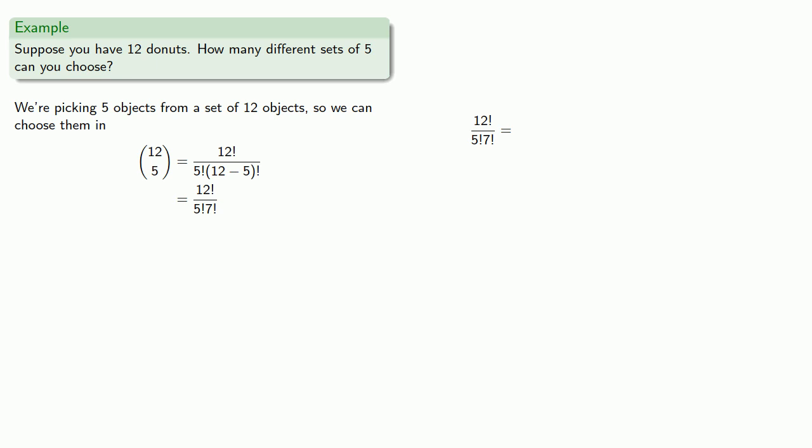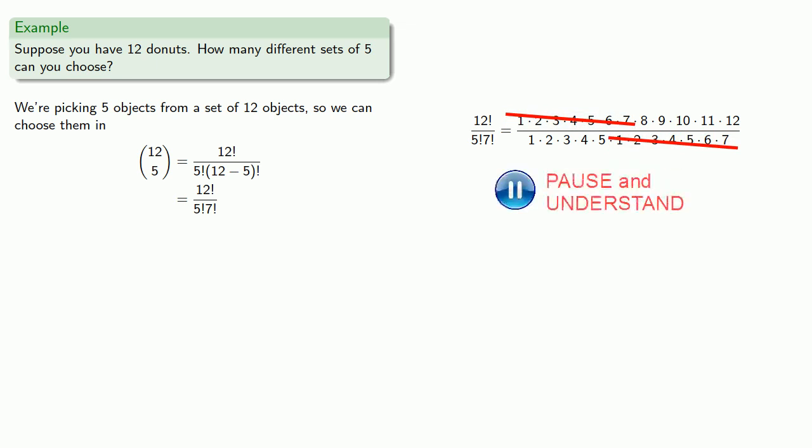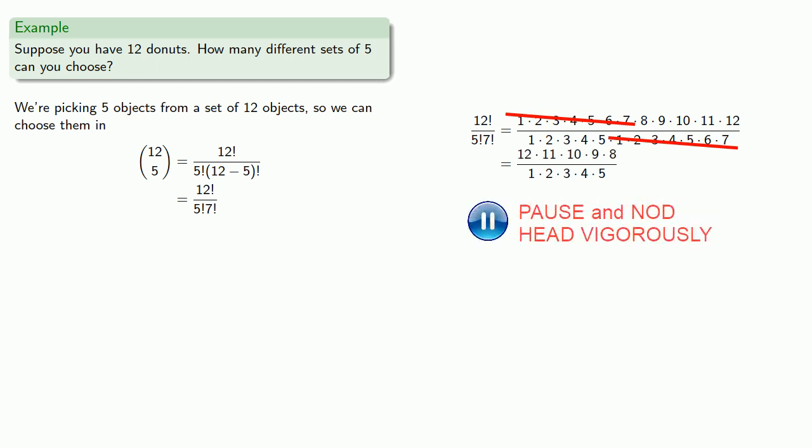Our 12 choose 5 will look like this. For reasons that will become apparent in a second, we'll remove this set of common factors from numerator and denominator and simplify. Our denominator will be the products 1 through 5. The factors that are left in our numerator, we'll write them in descending order from 12 down to 8. We can compute this value as 792.